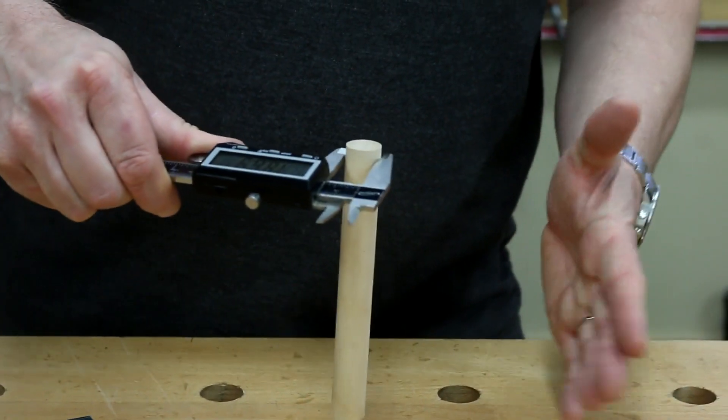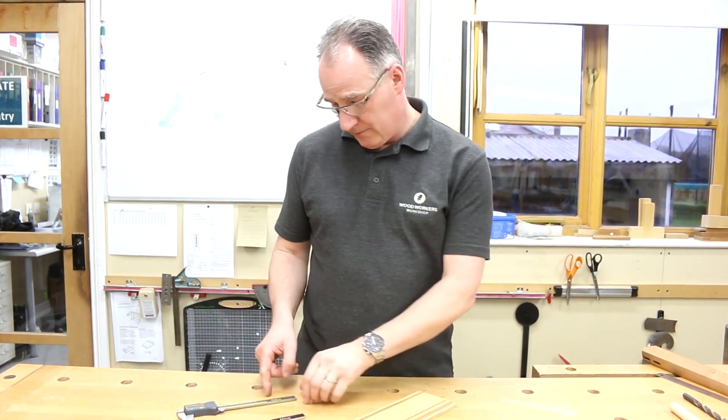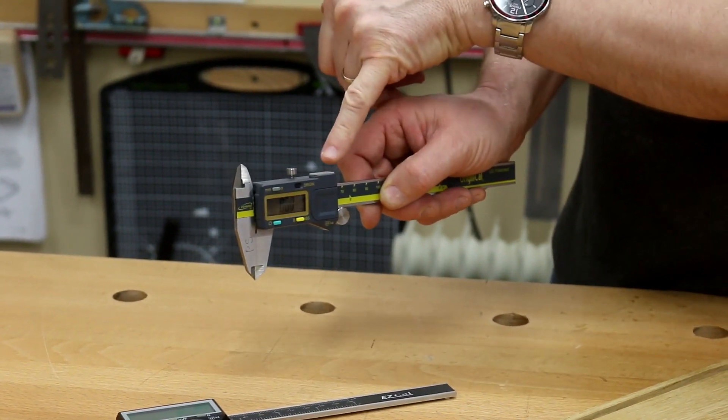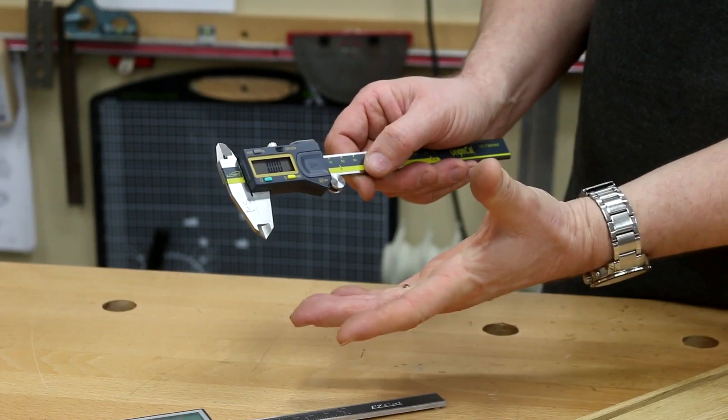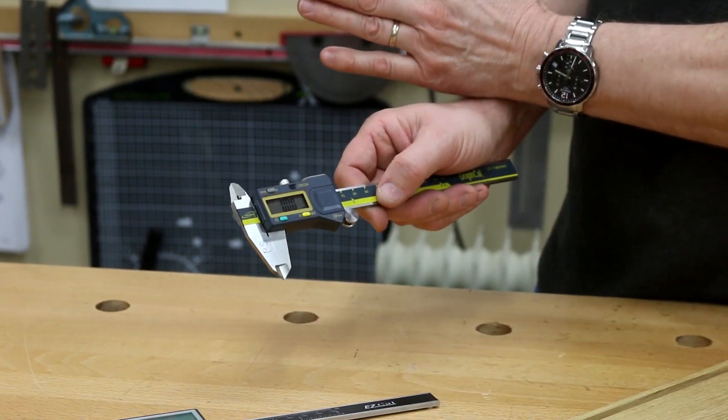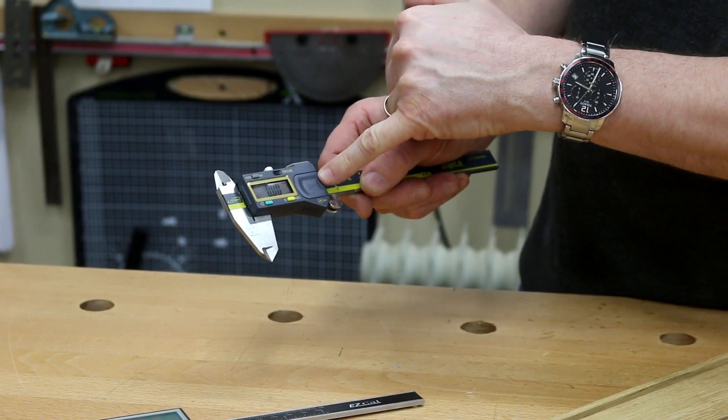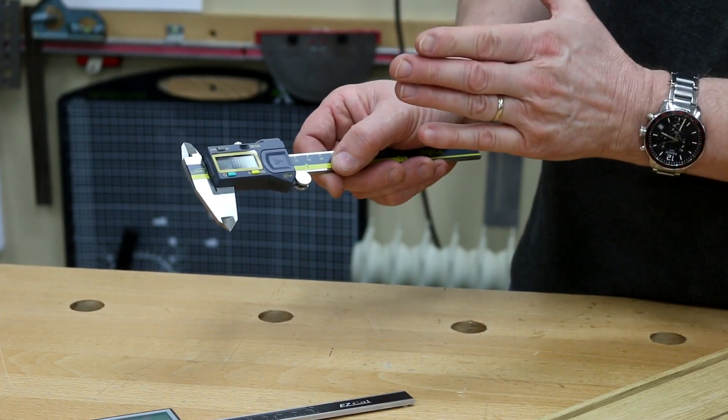The iGaging Origin Cal is a slightly more expensive version. This one now we can have data output from the caliper straight to your laptop, so if you're using this for engineering or trying to set up AutoCAD drawings from it, it's going to be useful for that. We have a battery compartment in here. IP54, as with the other calipers, which means they're good and safe from dust and moisture in any workshop environment.